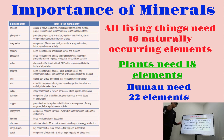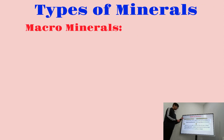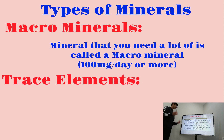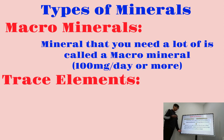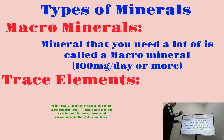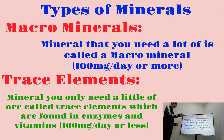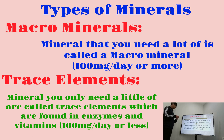There are two types of minerals: macrominerals and trace elements. Macrominerals are those you need a lot of — 100 mg per day or more. Trace elements are those you only need a little of, usually found in enzymes and vitamins, requiring 100 mg per day or less. So macro is more than 100 mg and trace is less than 100 mg. That sums up everything about nutrients.